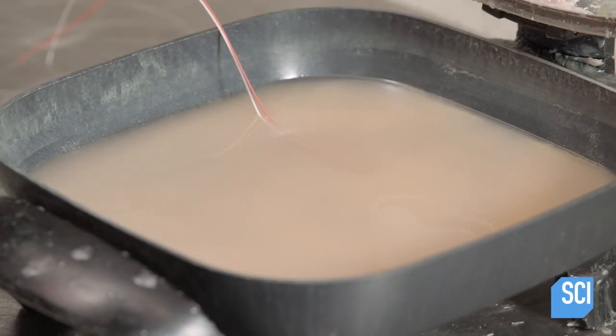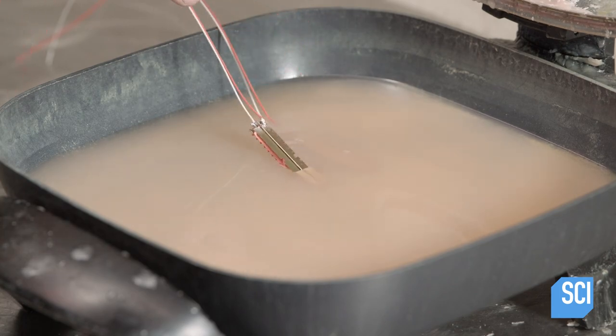He then submerges the coil in hot liquid wax. The wax will encase the wire windings to prevent mechanical vibrations.